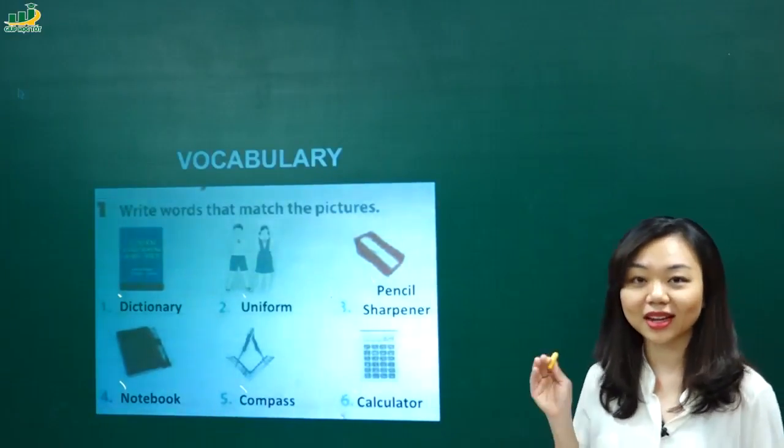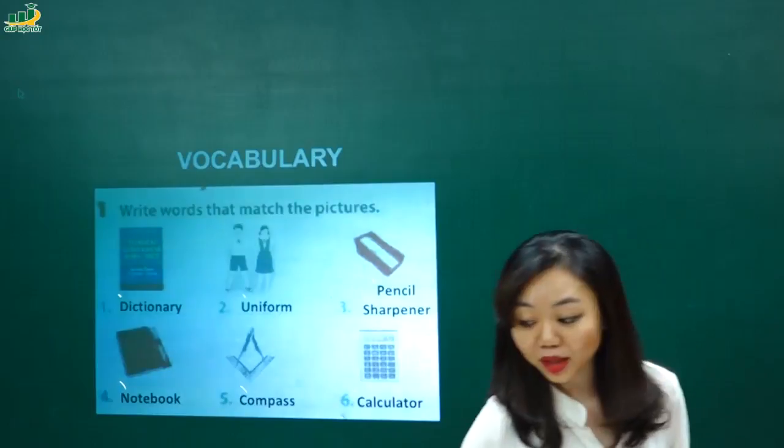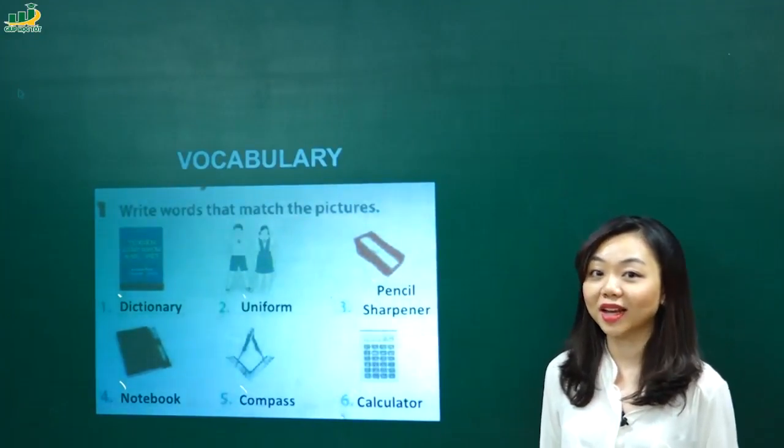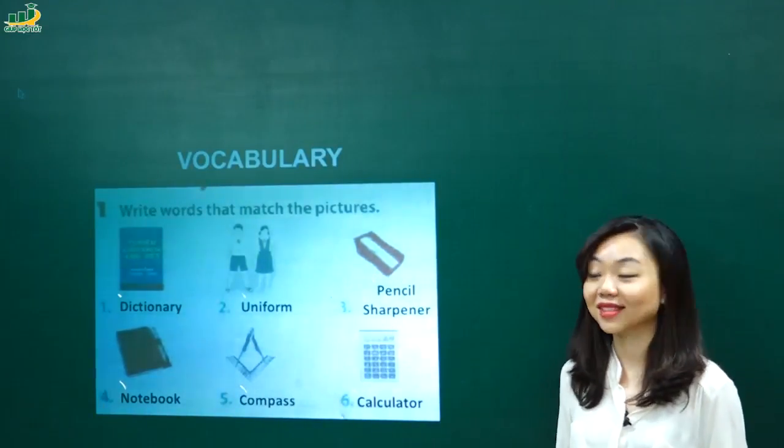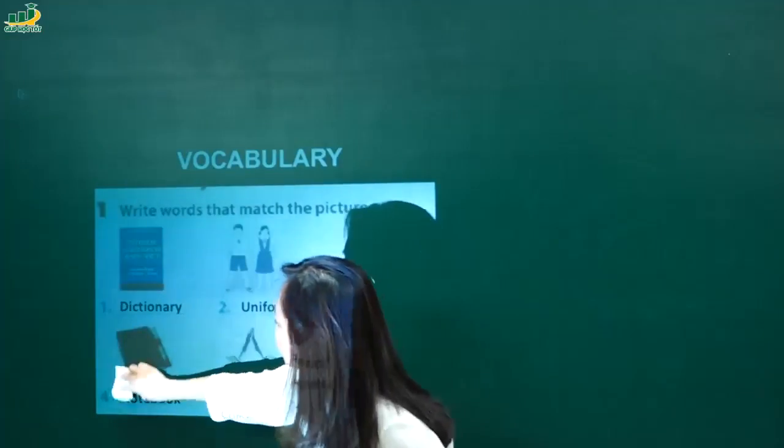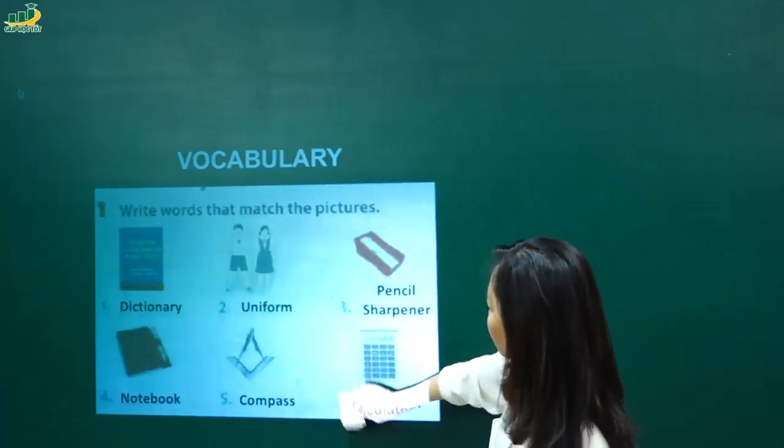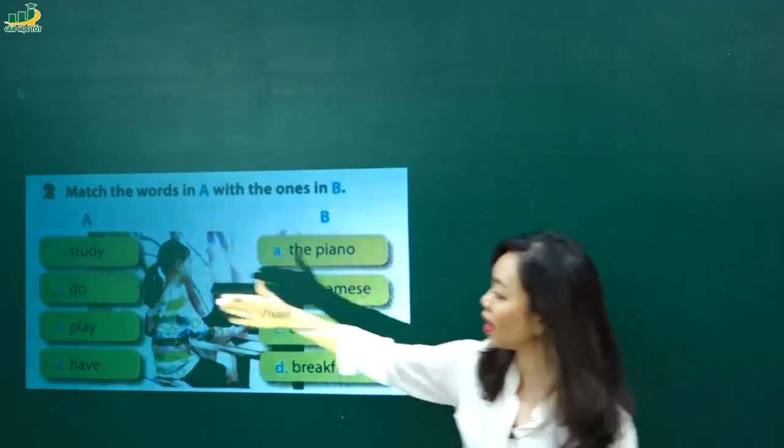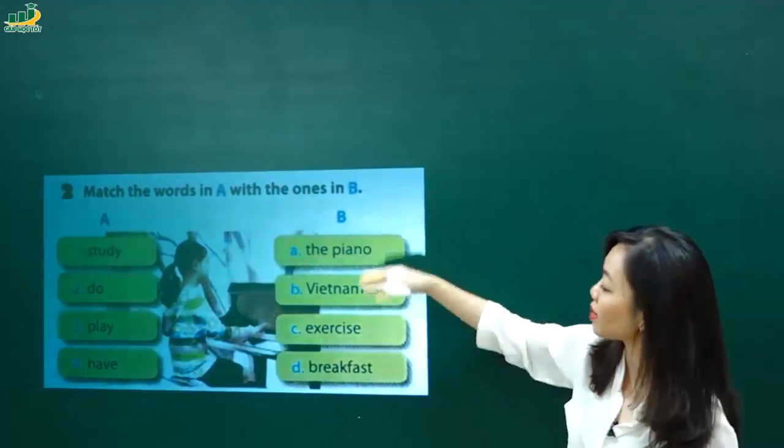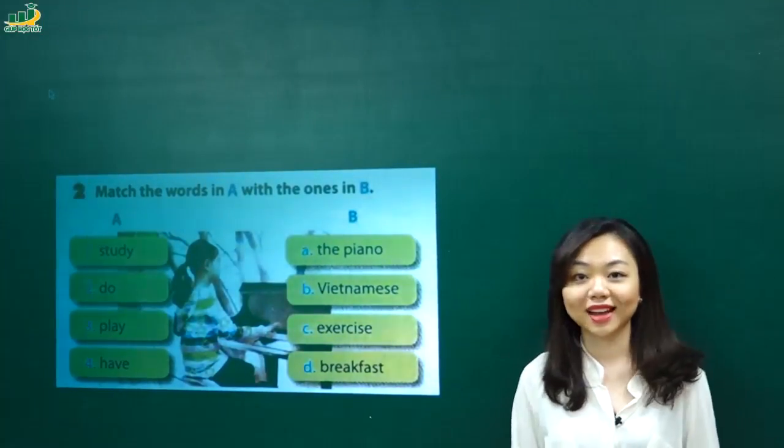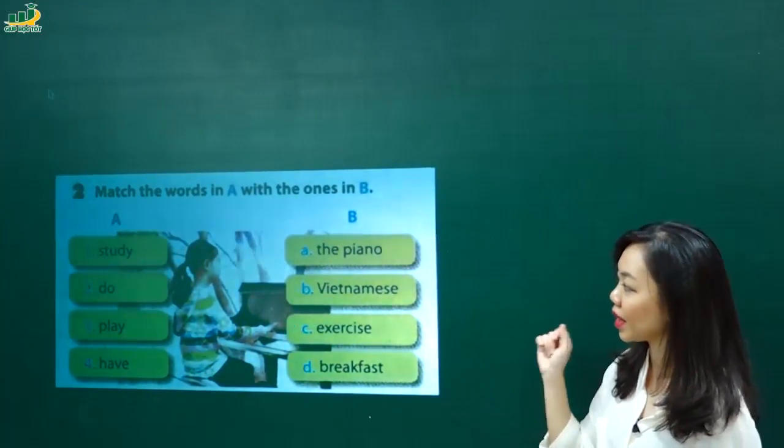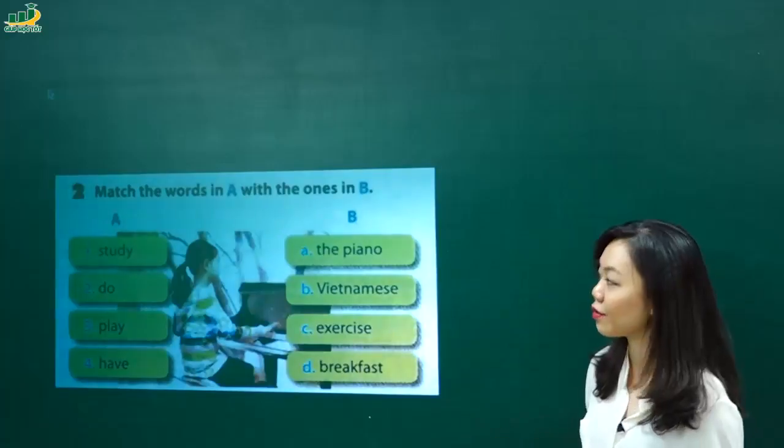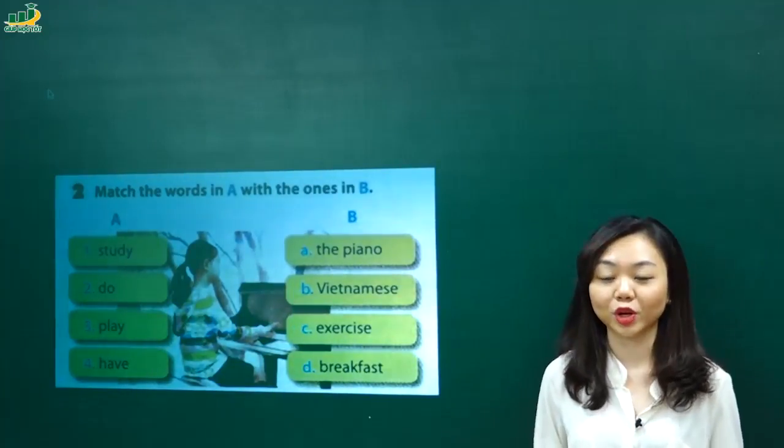Và tiếp theo mình sẽ đi ra một cái bài tập nữa. Bài tập để ôn lại cách sử dụng của bốn động từ. Các em còn nhớ không nhỉ? Đó là play, do, have và study. Ok. Tiếp theo nhé. Ok. Match the words in A. This is the words in A with the ones in B. This one. Nhiệm vụ các em rất đơn giản thôi. Các em hãy kết, hãy nối những cái động từ ở bên cột A, bên tay trái với những cái từ ở bên tay phải để tạo thành một cái cụm mà nó đúng về cả ngữ nghĩa.